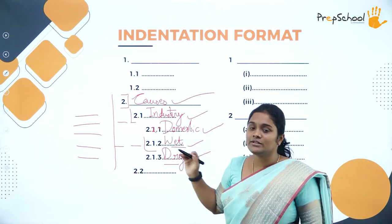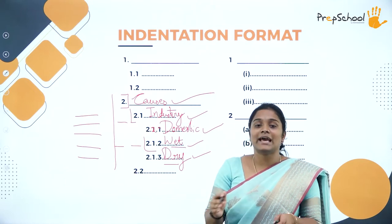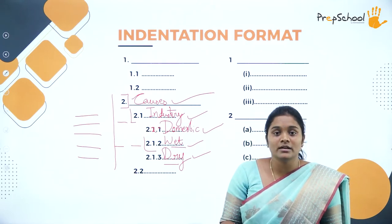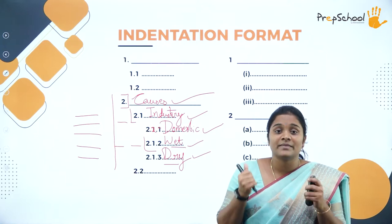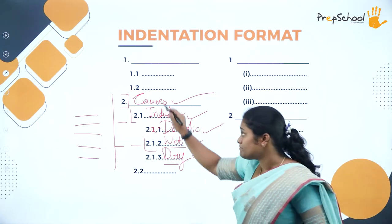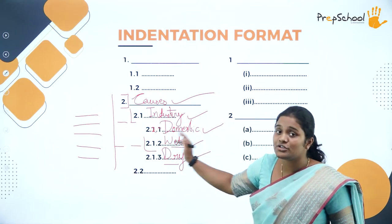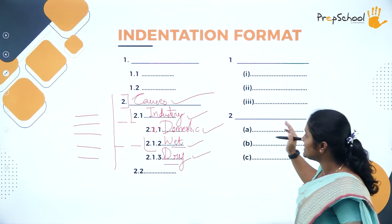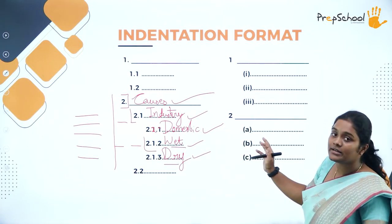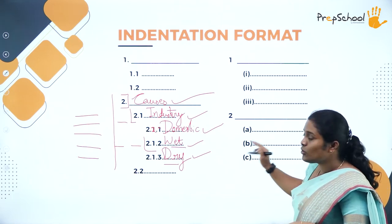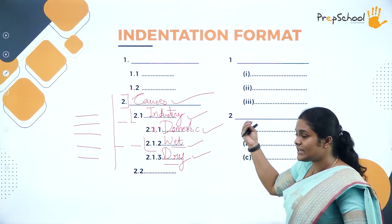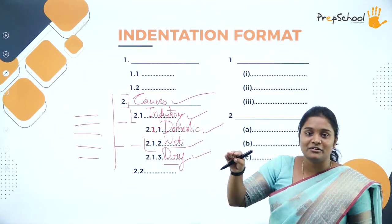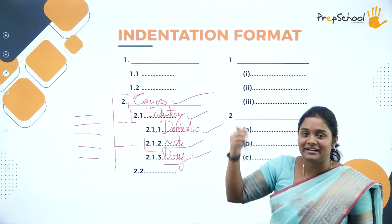Main section, subsection, and sub-subsections — you can make as many sections as you want, as long as it makes sense and fits the plan. Make sure the numbers and indentation do not go out of the margin — this is very mandatory. This is how the format looks. Take a closer look, ingrain it into your memory and never let it go.